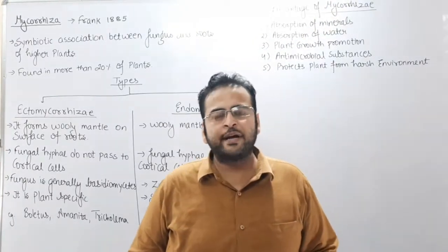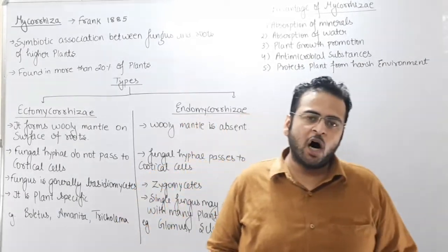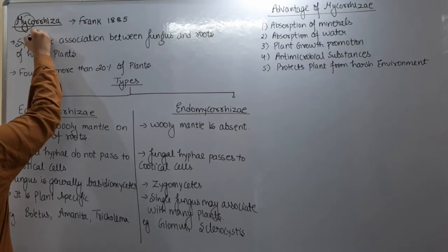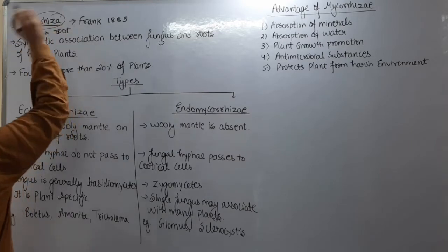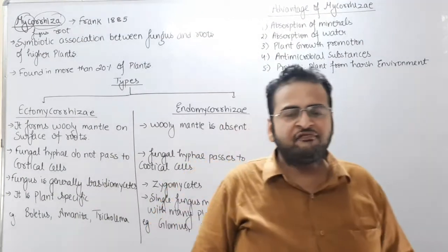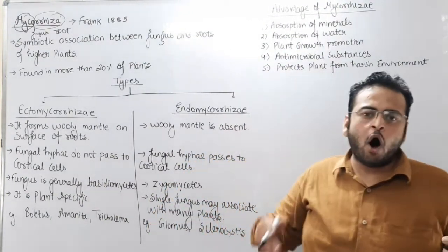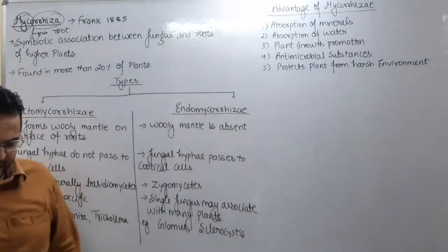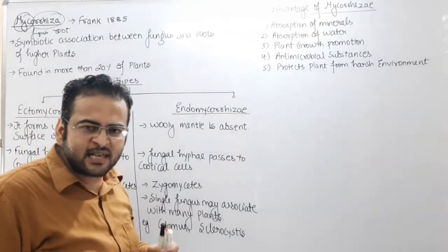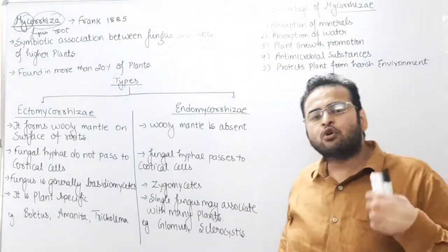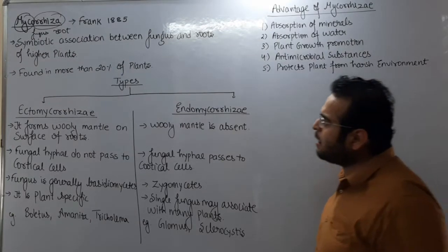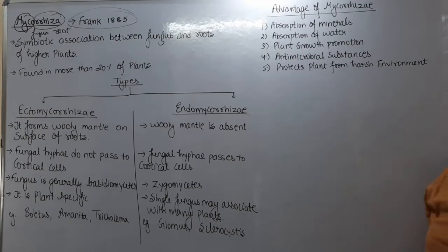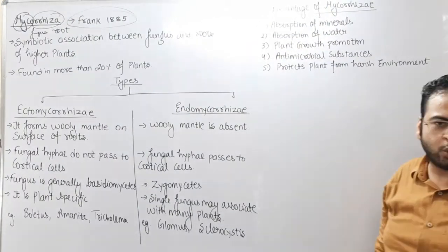Hello students, today we are going to discuss a very interesting topic of mycorrhiza. The word 'myco' means fungus and 'rhiza' means root, so it is a symbiotic association of fungus and root. Agar fungus aur root of plant collaborate karke koi structure banayen, to us structure ko kaha jata hai mycorrhiza. Mycorrhiza is the symbiotic association of fungus with the roots of higher plants, and this term mycorrhiza was given by Frank in 1885.